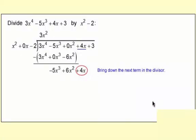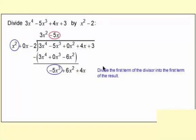Next step, bring down the 4x. It's positive 4x, so the plus sign is there as well. Then, how many times does x² go into -5x³? Or in other words, if you have x², what do you multiply by to get -5x³? The answer is -5x, so that goes up top.